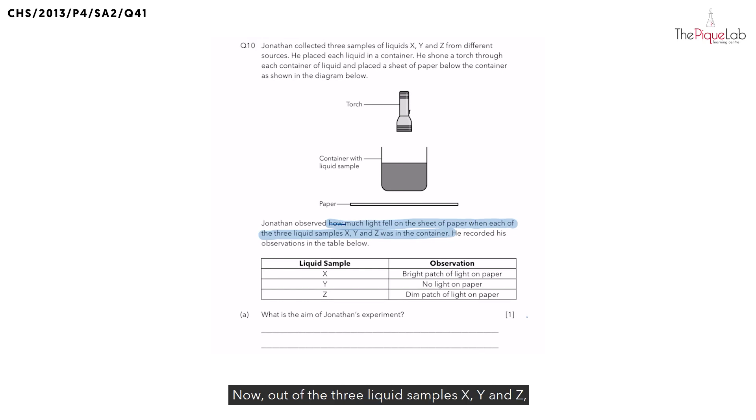Now out of the three liquid samples X, Y, and Z, we noticed that there was a bright patch of light observed when liquid sample X was tested. Now how are we able to observe a bright patch of light on the paper? It is because light from the torch must have traveled and passed through liquid sample X to reach the paper as shown.